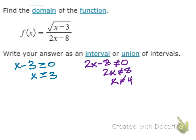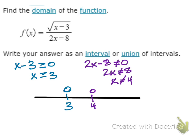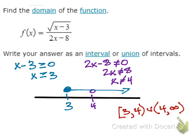Now, we're going to put these values on a number line. Here's a number line: 4 is an open circle because it can't be equal, and 3 is a closed circle because it can be equal, and since it's greater than, it goes to the right. To write this in interval notation, it would be from 3 to 4, union 4 to infinity. We had to break it at 4 because of that open circle.